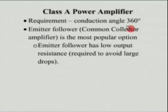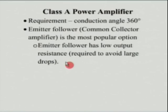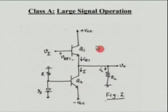Let us look at Class A amplifiers in detail and see why Class A amplifiers are not preferred, even though they conduct for the entire 360 degrees — which is the ideal situation. You can think of a Class A power amplifier as an emitter follower. In fact, that is the most popular choice, because we know that an emitter follower has low output resistance, which is one of the most important requirements of a power amplifier.